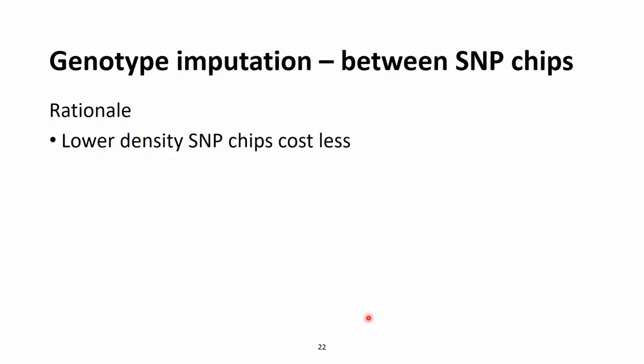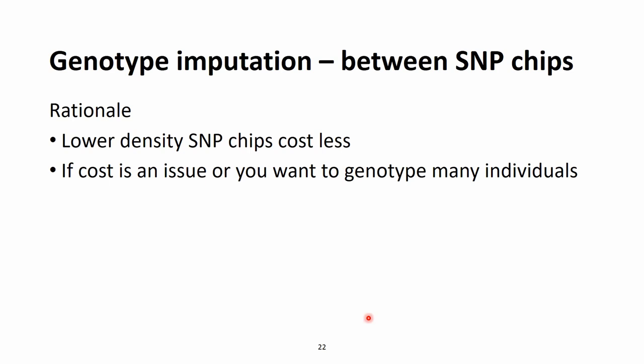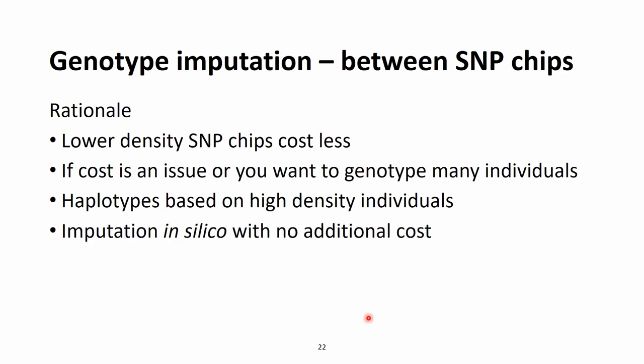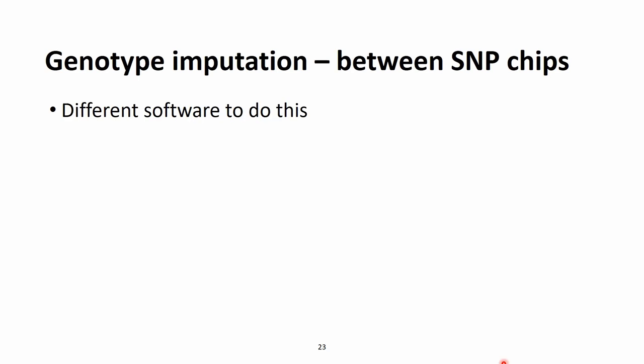Why is this useful? The lower density SNP chips tend to cost less, so if genotyping cost is an issue or we want to genotype a really large number of individuals, we can use just this lower density SNP chip and go for the imputation process. Of course for this we need haplotypes determined based on individuals genotyped by the high density SNP chip. This imputation is done in silico — basically with computers — which means it comes with no additional costs other than computation. There are different software options for this process and to my knowledge most of them are free or open access.